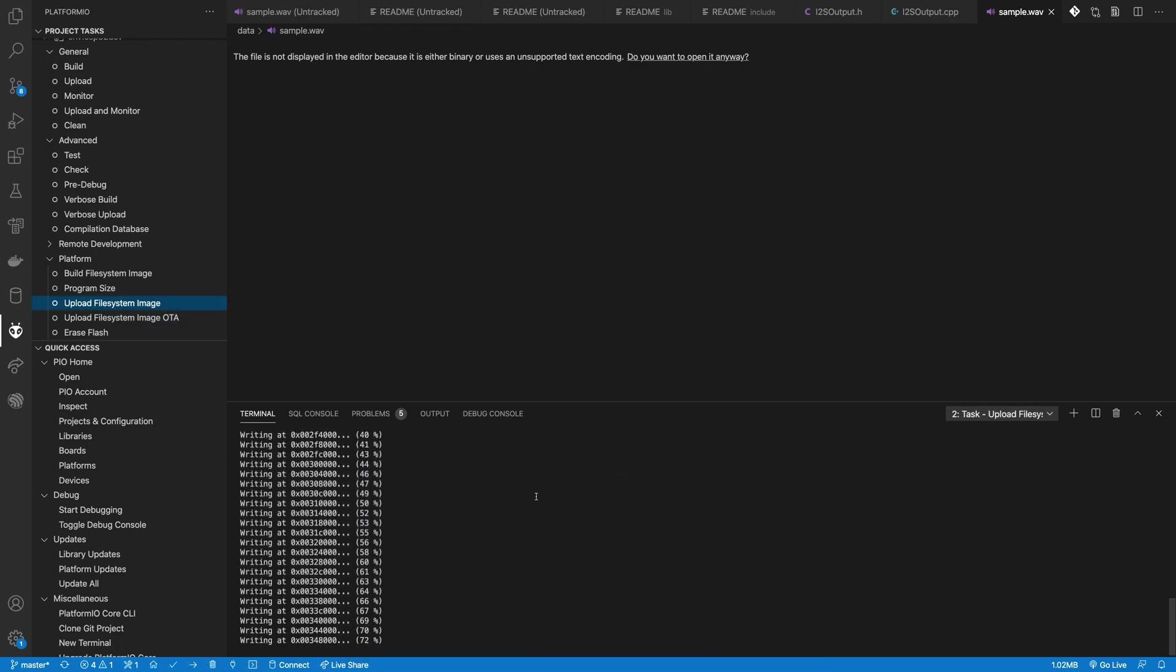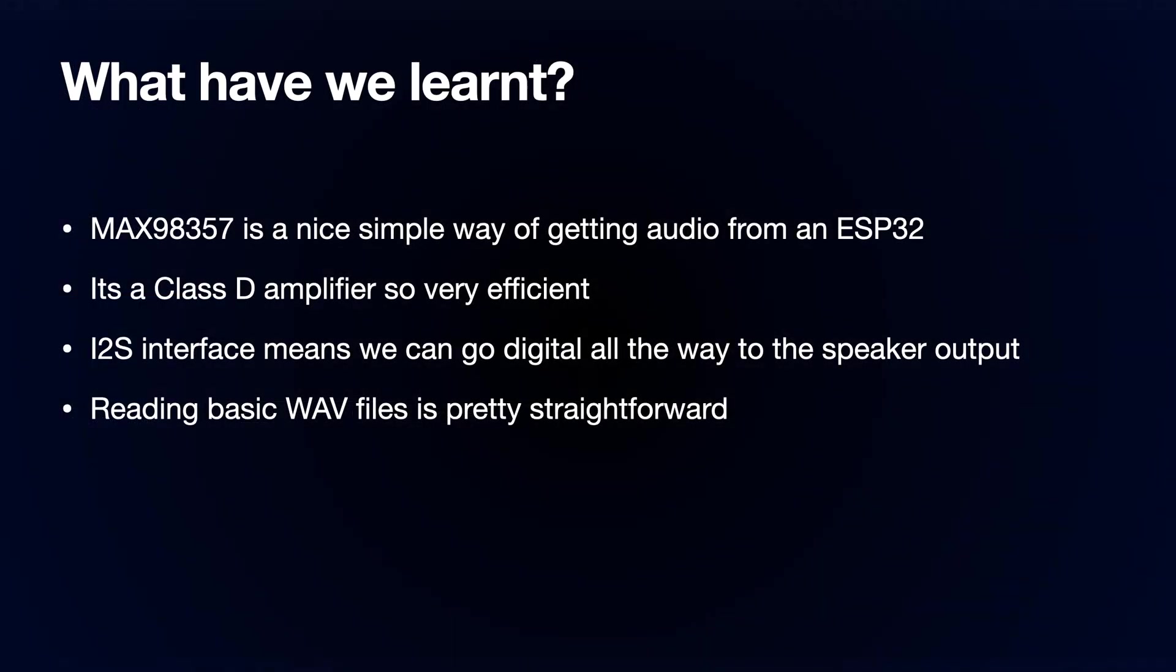So that's it for this video. I found the MAX98357 very easy to use and a nice simple way to get audio data out of the ESP32. It's a class D amplifier so it's very efficient and the I2S interface means that we are pretty much digital all the way to the speaker output. We've also seen that reading basic WAV files from SPIFFS is pretty straightforward.